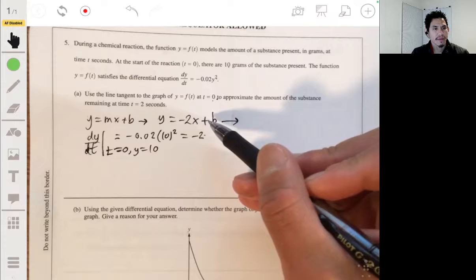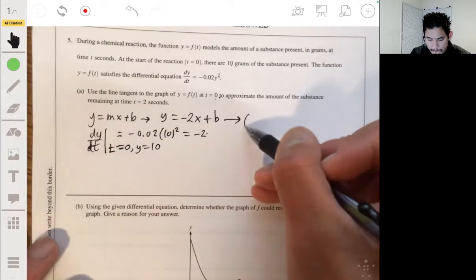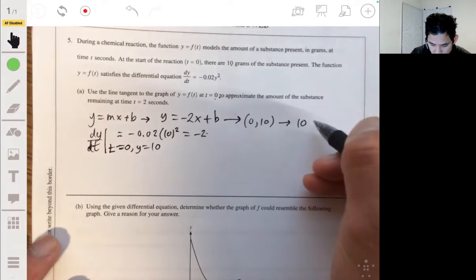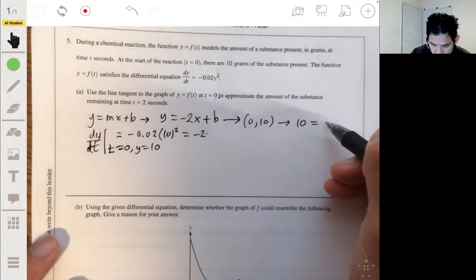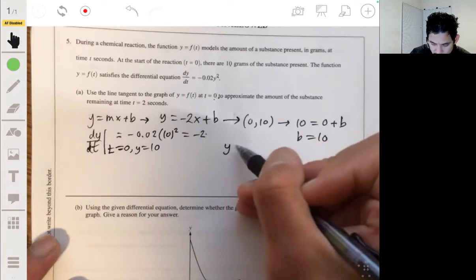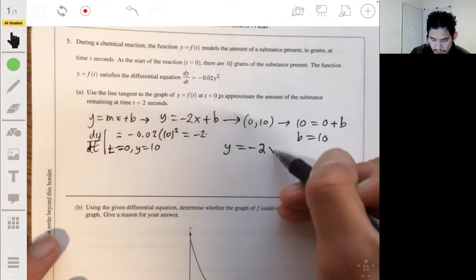Find the value for b by plugging in this initial condition 0, 10. We get 10 equals negative 2 times 0. So that falls away. And so then b is just 10. So our equation for our tangent line is y equals negative 2x plus 10.